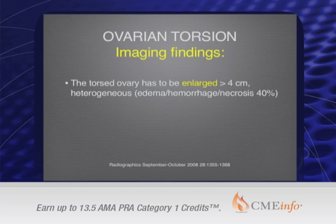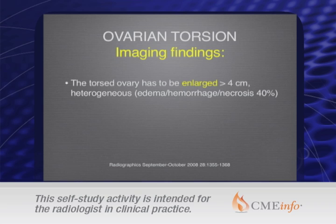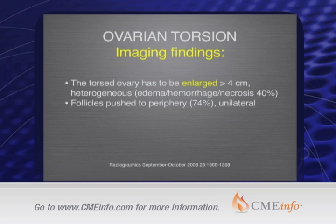The torsed ovary has to be enlarged — greater than four centimeters — but that's just a number. Generally, I like to compare it to the other side to confirm it is bigger. The very typical appearance is when the follicles are pushed to the periphery, with edema in the central stroma and sometimes hemorrhage into the ovarian stroma.